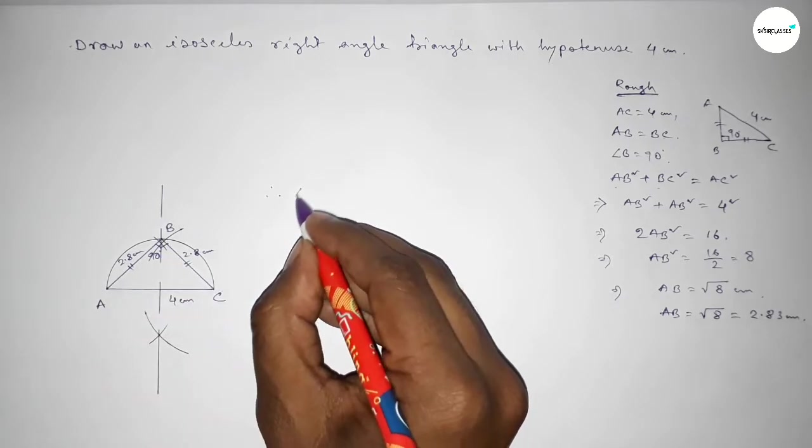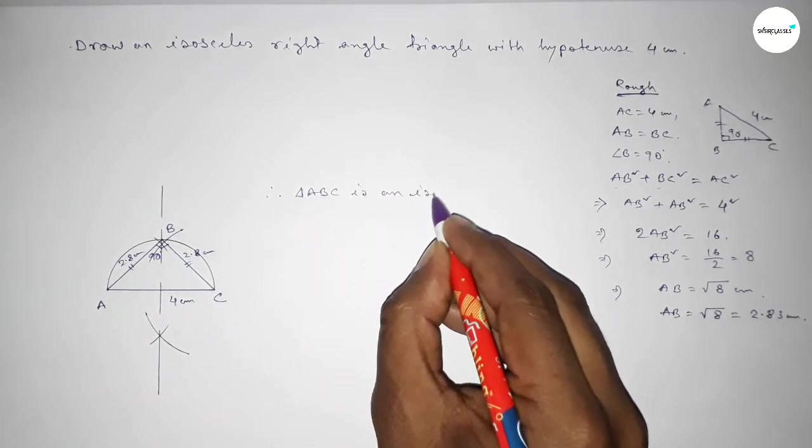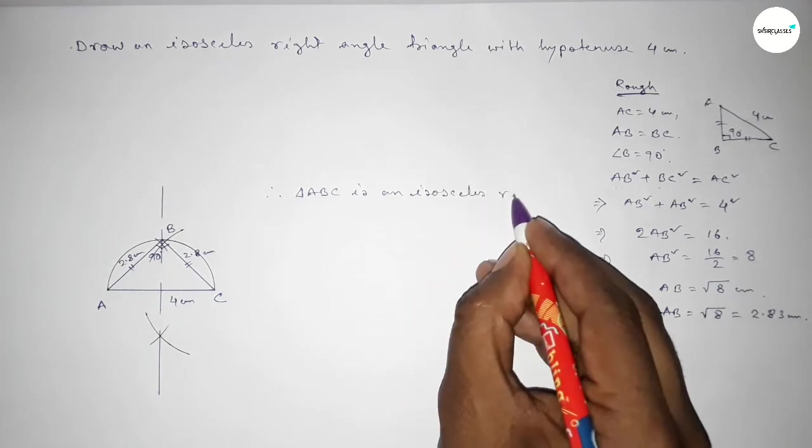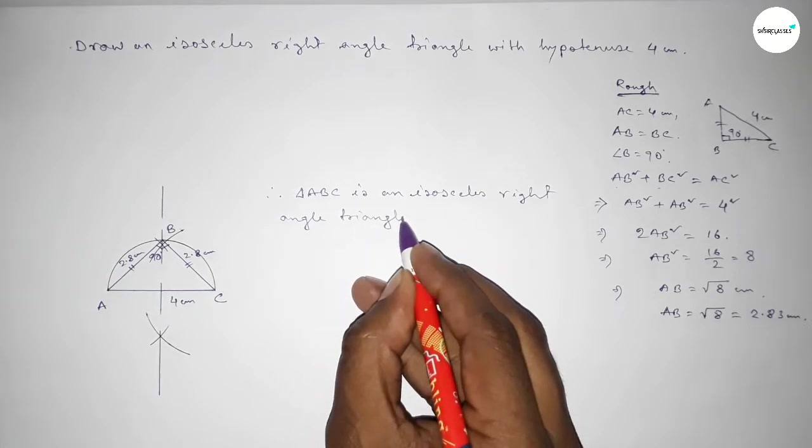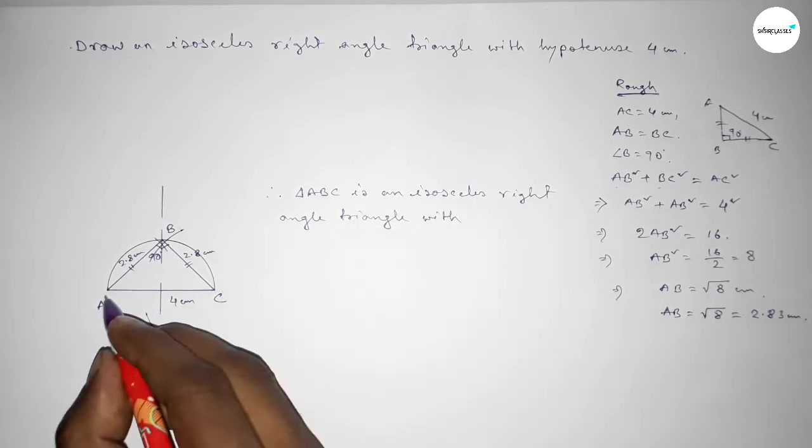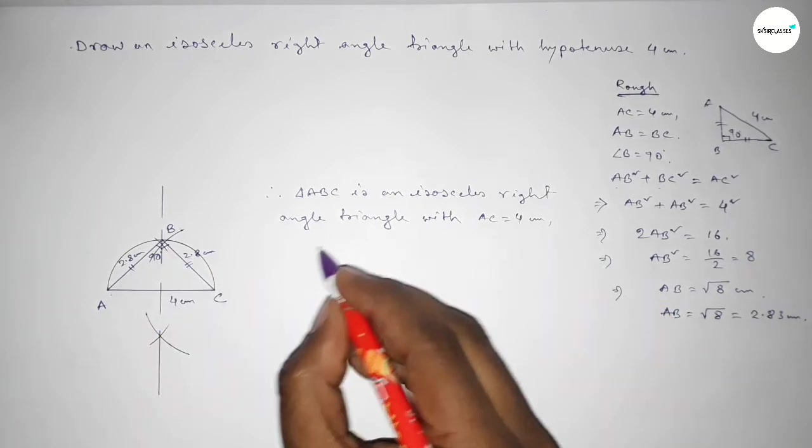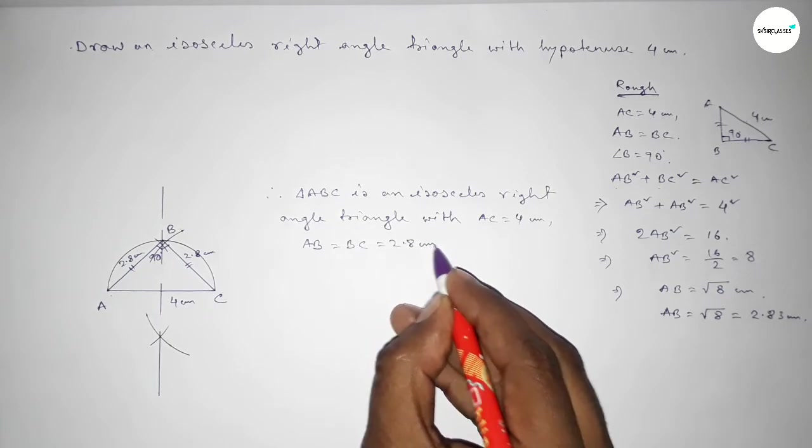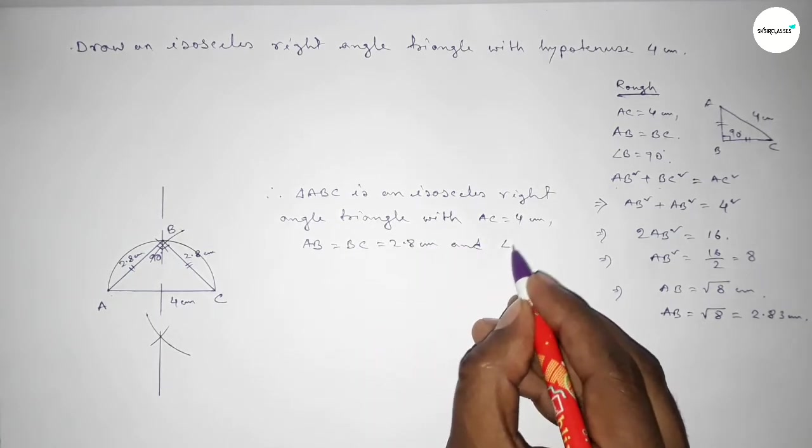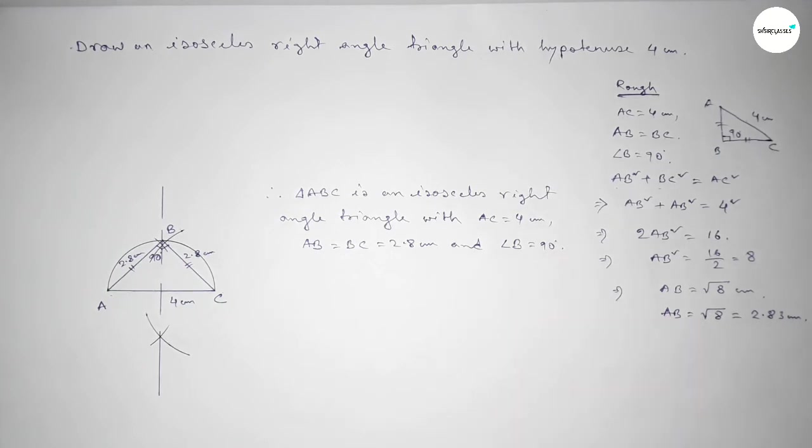Therefore triangle ABC is an isosceles right angle triangle with hypotenuse AC equal to 4 centimeter and equal sides AB equal to BC, equal to 2.8 centimeter, and angle B equal to 90 degree.